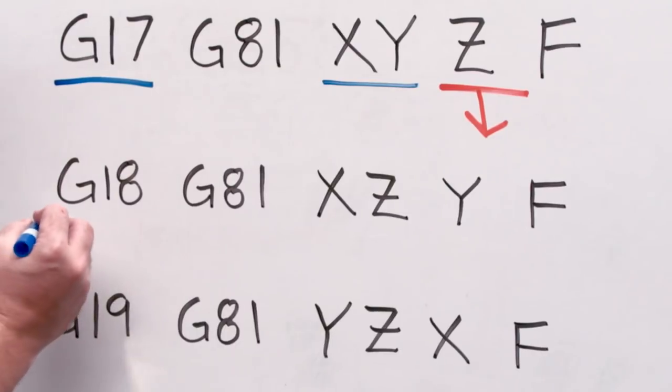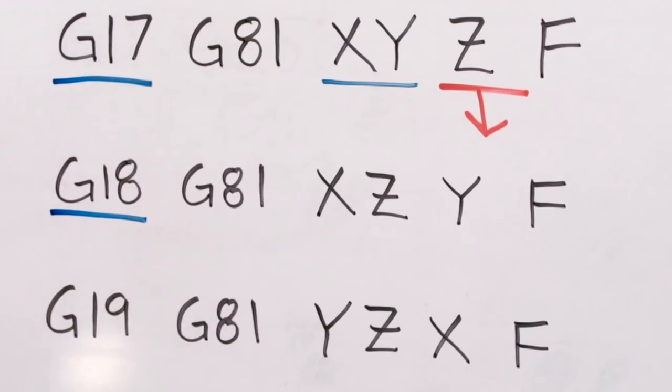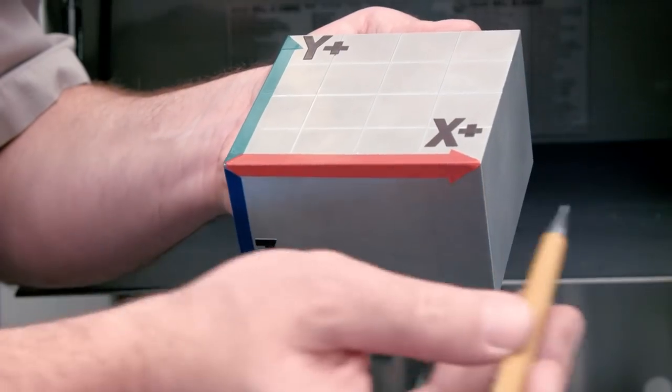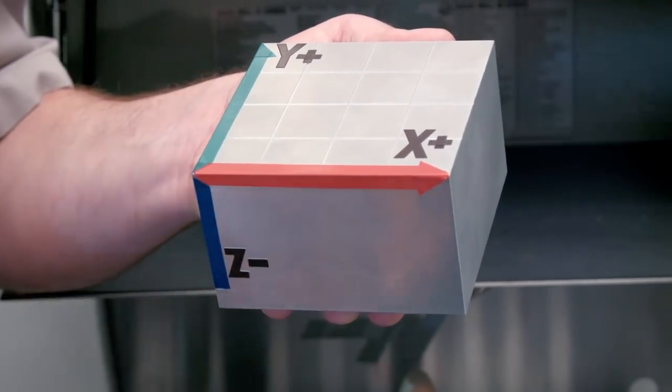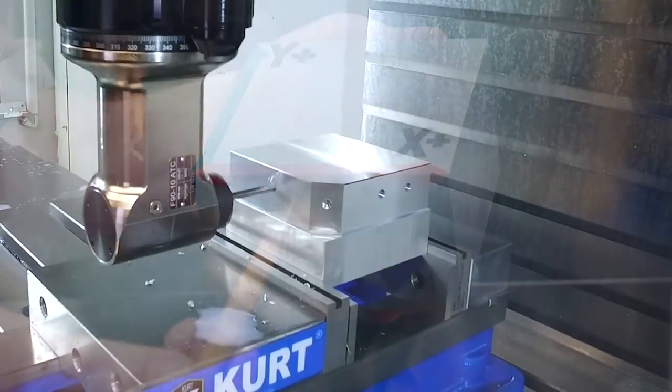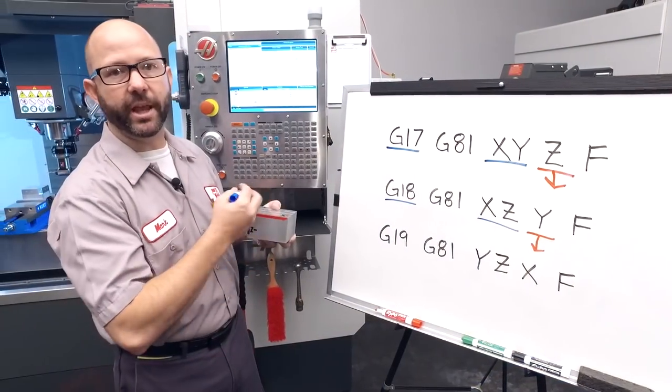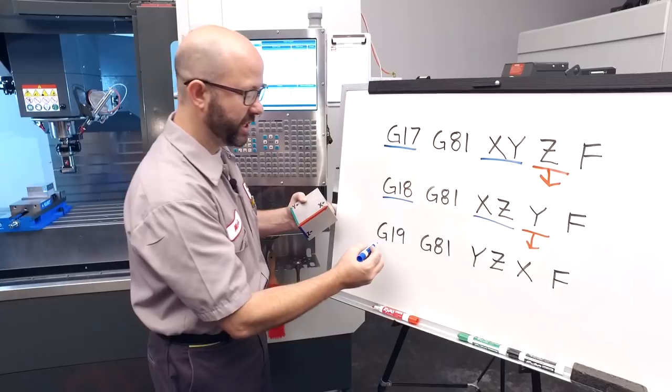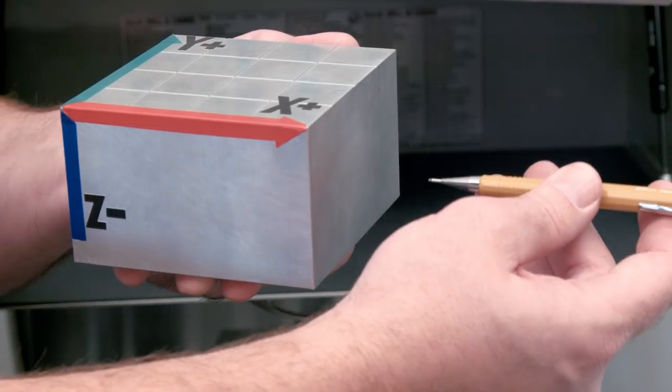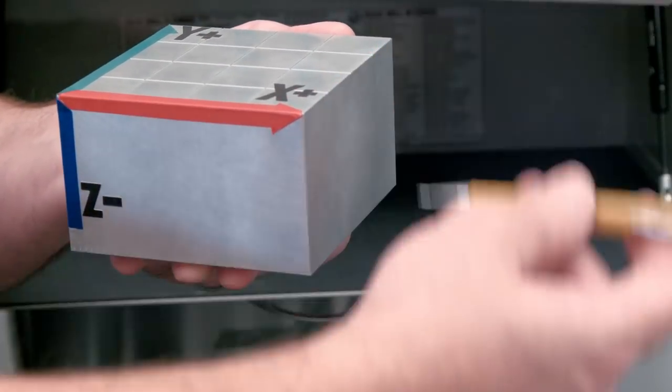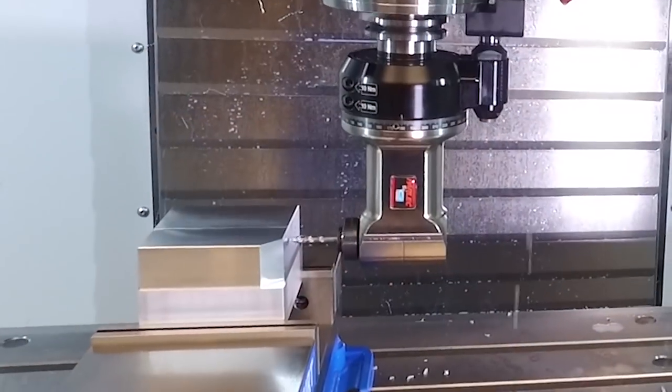If we use a G18 plane, this means that we're going to be positioning ourselves along the X and the Z axis and drilling to a Y depth. If we want to drill along the X axis, we're going to use the G19 plane. We're going to position ourselves along the Y and the Z axis and drill to an X depth.